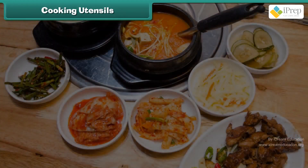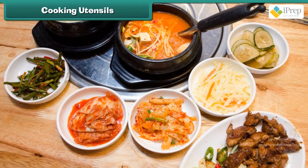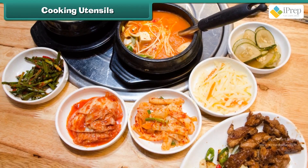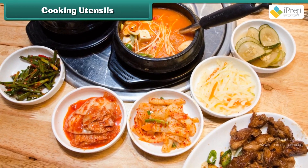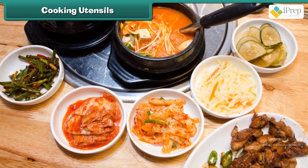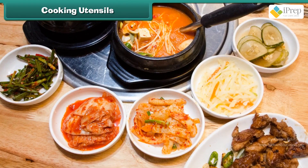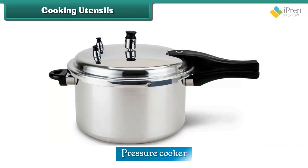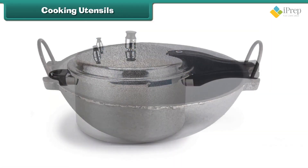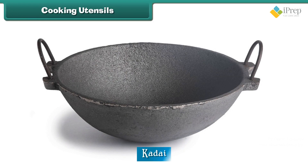Cooking Utensils: People use different utensils to cook food. Utensils are made up of steel, brass, or clay. The pressure cooker helps to cook food quickly. The kadai is a deep frying pan used to cook vegetables and fry food items.